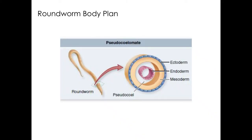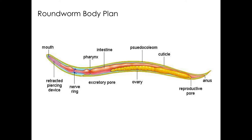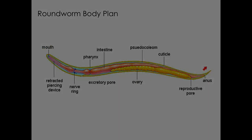Unlike flatworms, roundworms are pseudocoelomates — they have a body cavity that is only partially lined with mesoderm. They also have a complete digestive system with a separate mouth and anus.